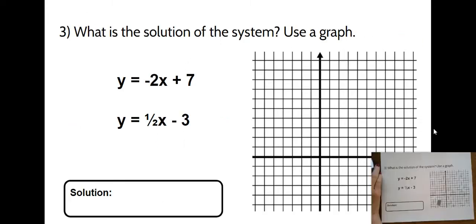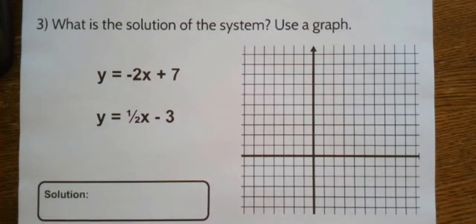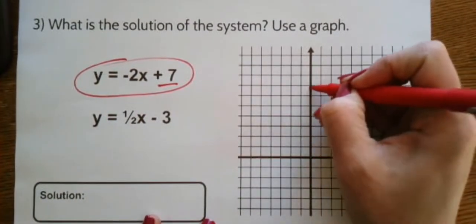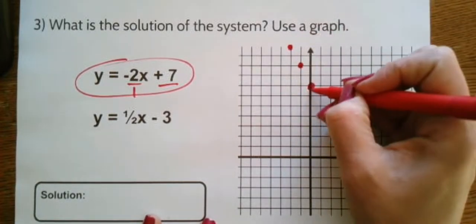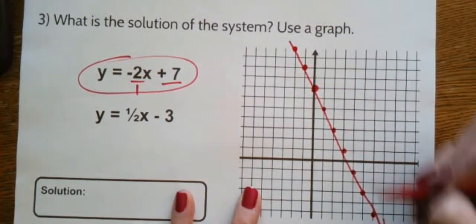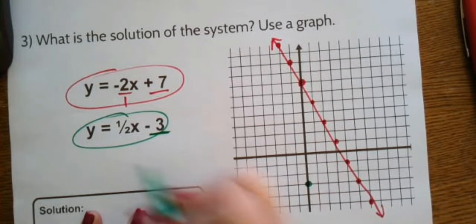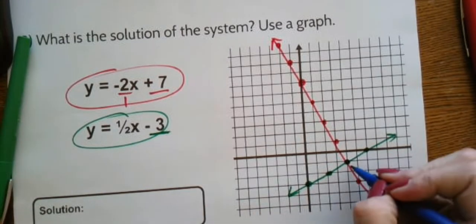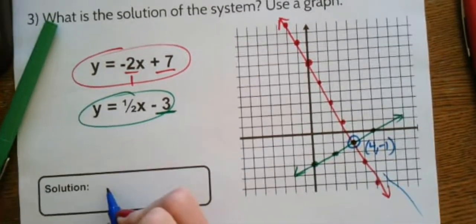On number three, it asks for the solution using a graph. It's easy when both equations are in y = mx + b form. The first line in red has a y-intercept of 7 and a slope of −2, so I plot and draw it across the plane. The second line in green has a y-intercept of −3 and a slope of 1/2 — up one, over two. The point of intersection is (4, −1), so the solution is (4, −1).